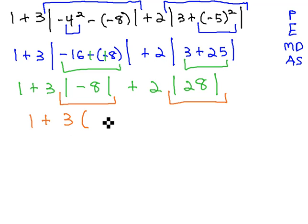Negative 8, the absolute value is positive 8, plus 2 times the absolute value of 28 is still positive 28. And I'll write those now with curved parentheses, as the absolute value is done, and we just have to continue working through the order of operations.